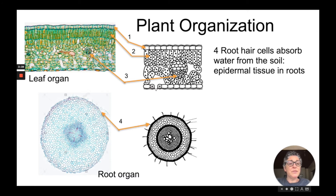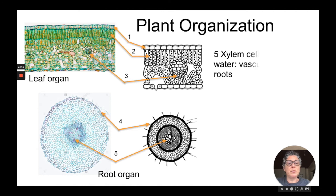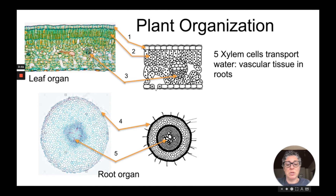In the root, which is a different organ, root hair cells absorb water from the soil and form epidermal tissue in the roots. Xylem cells transport water, forming vascular tissue in the roots. So the epidermal and vascular tissues together form the root organ in a plant.